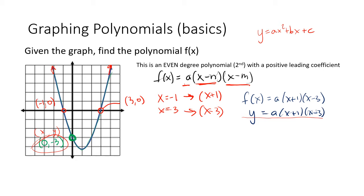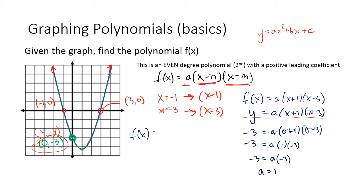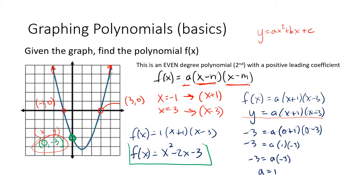The y-intercept is (0, -3), so we plug in y = -3 and x = 0: -3 = a(0 + 1)(0 - 3) = a(1)(-3) = -3a. So a = 1. That means f(x) = (x + 1)(x - 3), which multiplied out gives f(x) = x² - 2x - 3. That is how we work backwards from a graph to identify the actual polynomial.